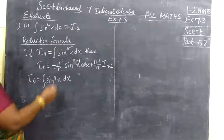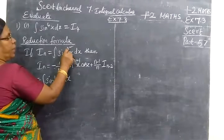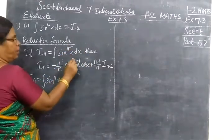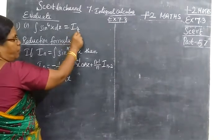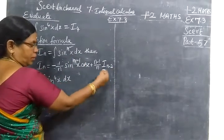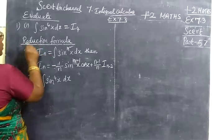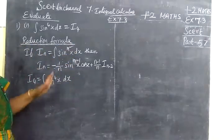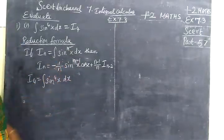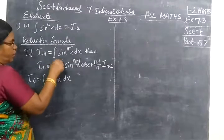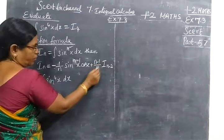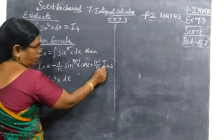Reduction formula: you can see the integral sin power nx dx. The power is in lower form. In this case, I₄ is in the form of I_{n-2}. That is the lower form of the function. For that we are using the reduction formula. So here we are using I_n equal to minus 1 by n times sin^{n-1}x cos x plus n-1 by n times I_{n-2}.